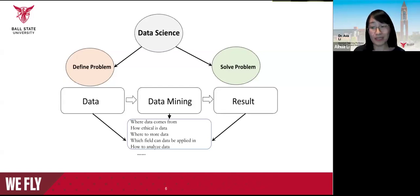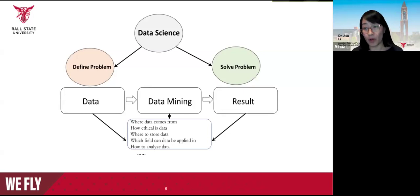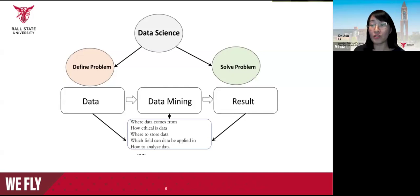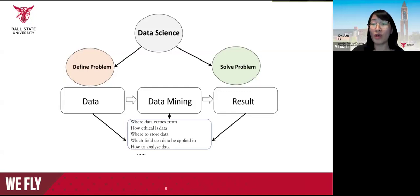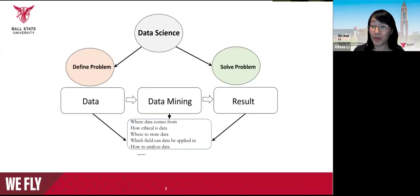Topics in data science include: where the data comes from, how ethical the data is, where to store and manage it, which fields the data can be applied to solve problems, and how to analyze and visualize your data. Through all this process in data science, we aim to turn big data into big knowledge that can make informed solutions.